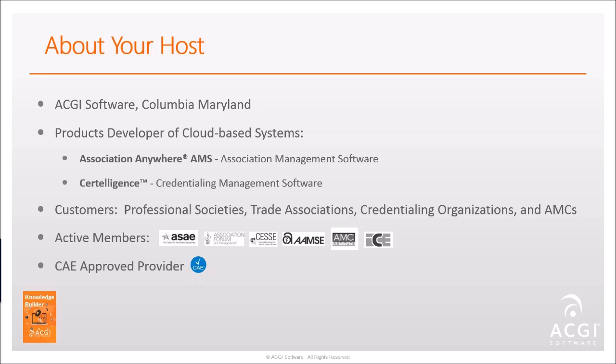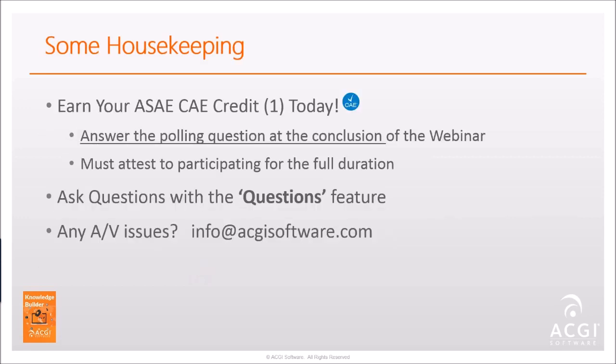A little about our host: ACGI Software is located in Columbia, Maryland. We develop two systems — Association Anywhere, an association management software system, and Answer Intelligence, a credentialing management software system. We work with professional societies, trade associations, credentialing organizations, and association management companies that work with a portfolio of different organizations. Today's education webinar will earn you a CAE credit — you must answer a polling question at the conclusion to confirm you sat for the full duration.